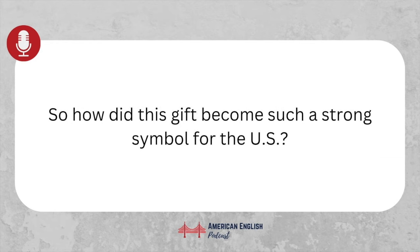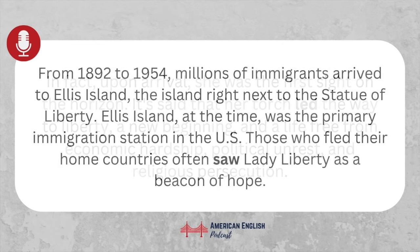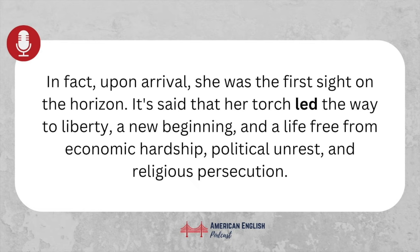So how did this gift become such a strong symbol for the U.S.? From 1892 to 1954, millions of immigrants arrived to Ellis Island, the island right next to the Statue of Liberty. Ellis Island, at the time, was the primary immigration station in the U.S.